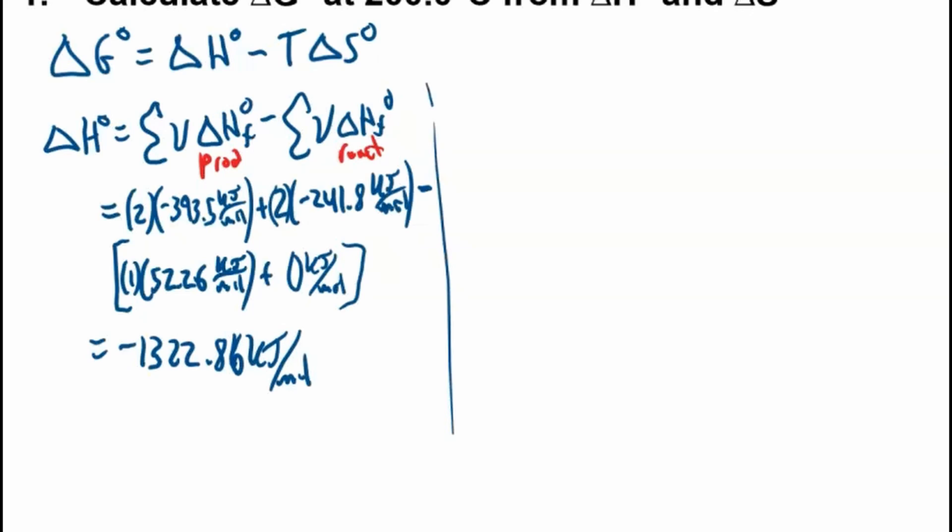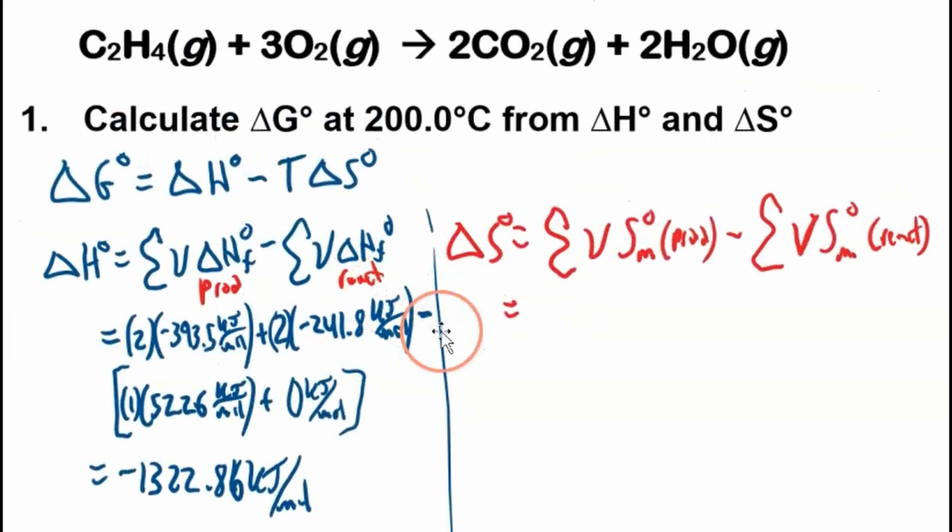The standard entropy of reaction is the same as this. I'll write it out just so you see it, but it's the sum of the molar entropies of the products minus the sum of the molar entropies of the reactants. These are supposed to be funny looking Vs. So we'll do the same thing as we did before, products minus reactants.